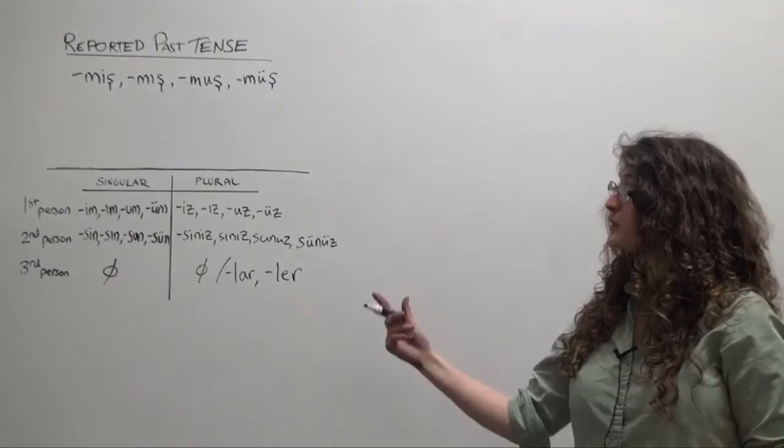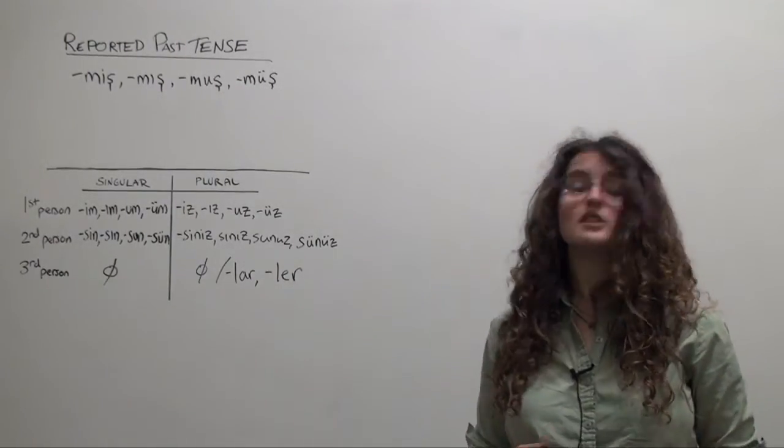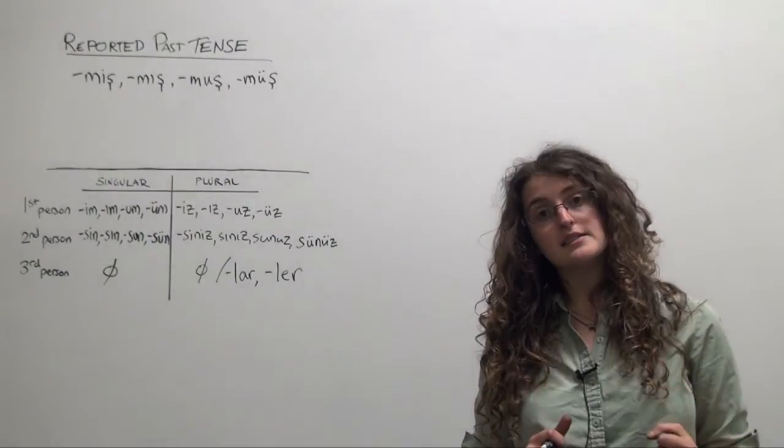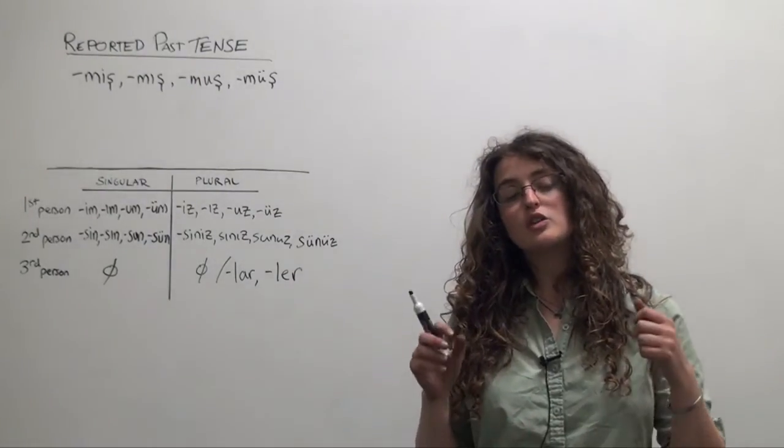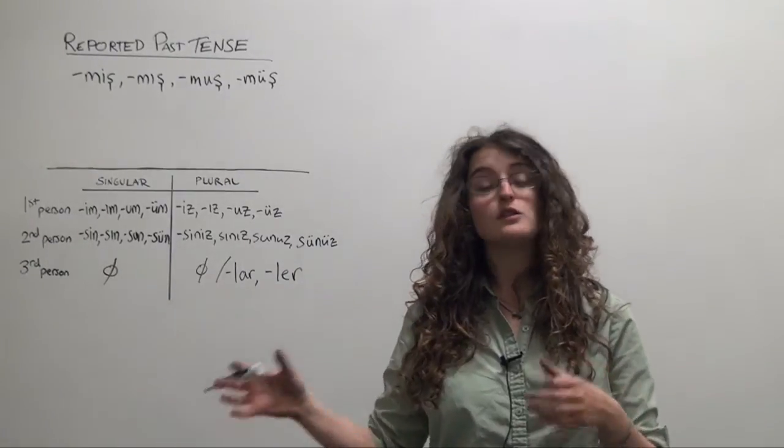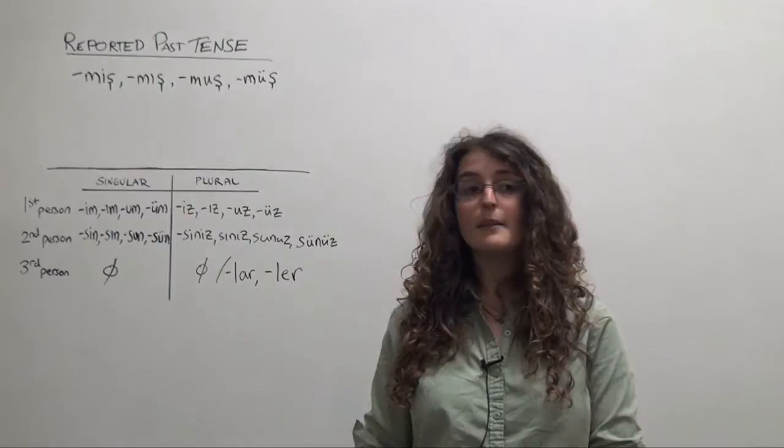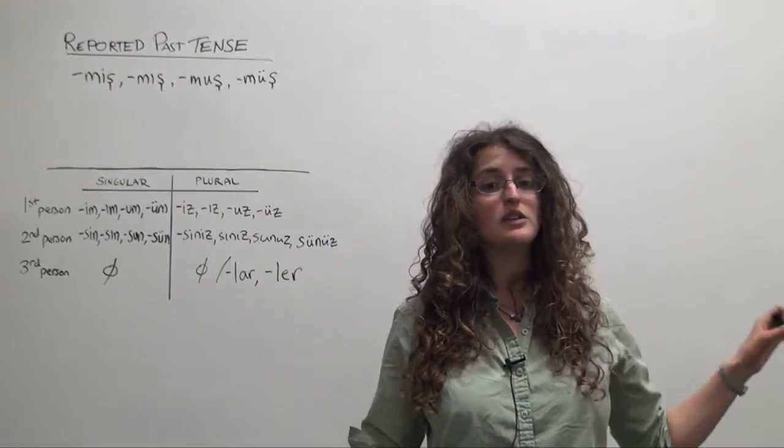Basically the reported past tense is the tense that you can use in Turkish to describe events which you're not entirely certain actually occurred, that you didn't see for yourself, that you have some doubt about, that happened far away and long ago and you weren't there.